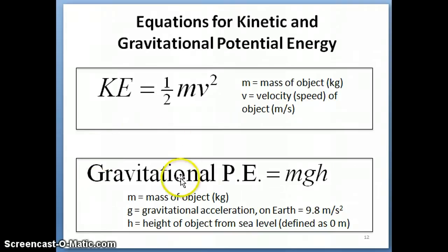Now gravitational potential energy, of course, has a different equation, and in the description that I mentioned in the previous video talking about the different heights of the person on the swing having different gravitational potential energy, you'll see that height is a component of the energy equation for gravitational potential energy. In fact, it's equal to mgh, where m is the mass of the object, again in kilograms.